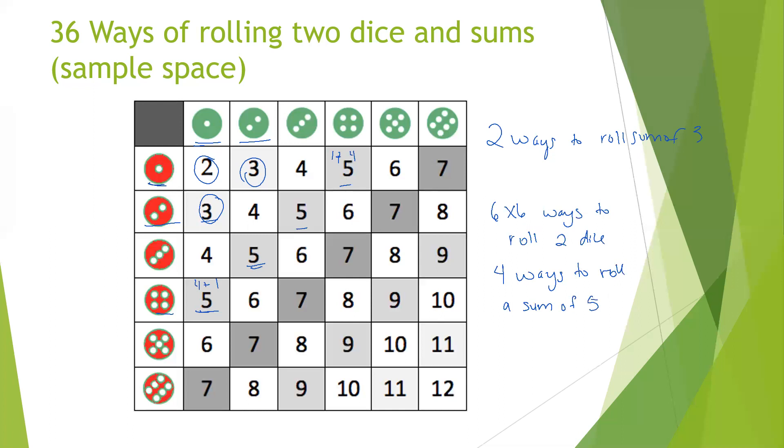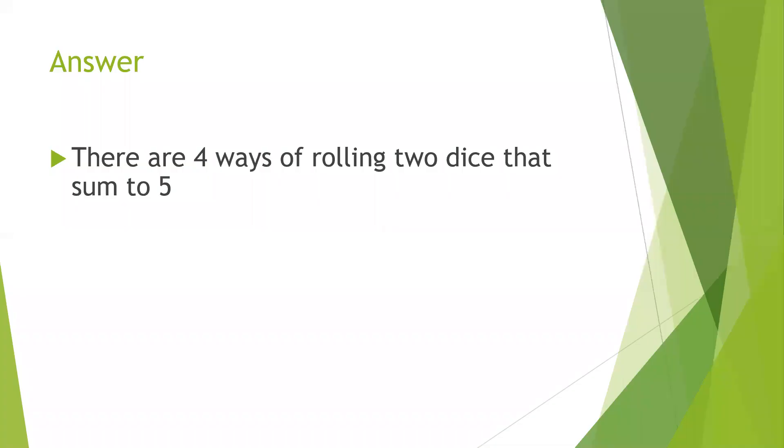Okay, so now let's use that information to move forward. We know that there are four ways of rolling two dice that sum to five, and we know that there's 36 ways to roll two dice in general. So that means the probability of rolling two dice that sum to five is 4 out of 36, but we need to reduce our fraction.